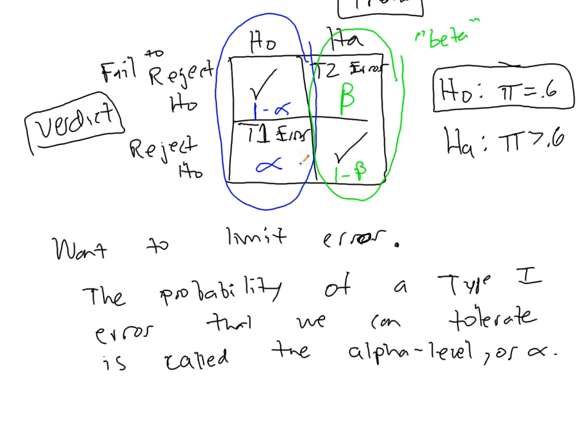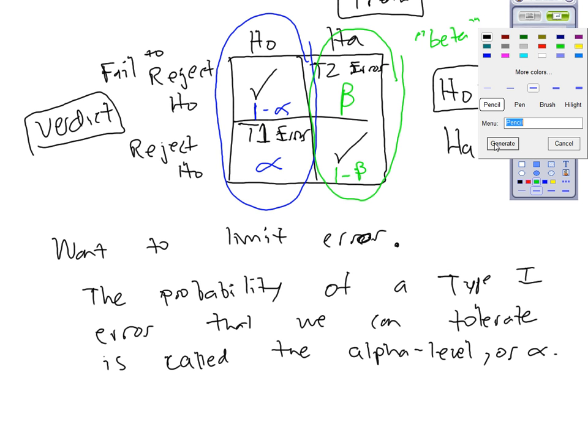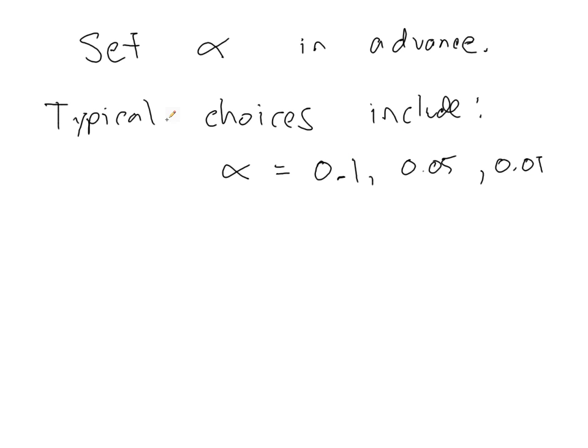We're not going to talk too much about these right now. We're going to focus on limiting this. Usually we set alpha in advance, because you want to know what error you're willing to tolerate. We set alpha in advance; typical choices increase.